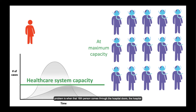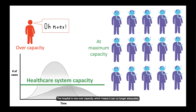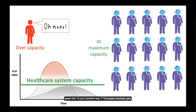The problem is when that 16th person comes through the hospital doors, the hospital will not have enough ventilators to take care of that person — at least not until one of the other 15 people being treated is well enough to go off the ventilator. The hospital is now over capacity, which means it can no longer adequately take care of every person who comes in with COVID-19 or any patient who is in need of a ventilator. Over capacity is represented by anything above this green line.